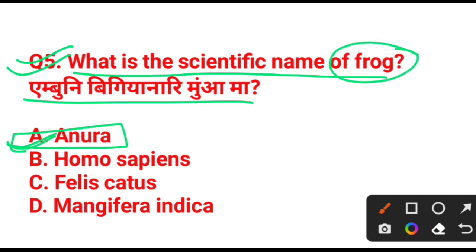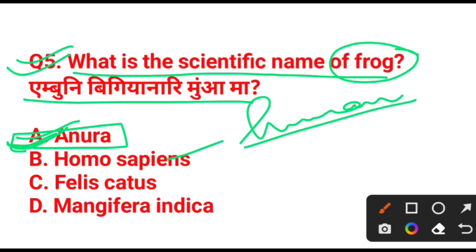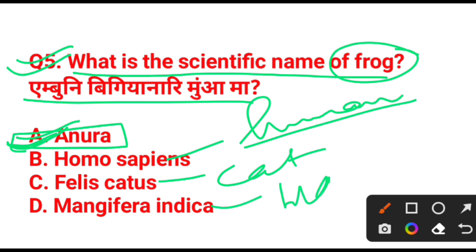Question number 6: the options include Anuran, Homo sapiens for human, Phallus, Catars, and Mangifera indica — Mangifera indica is the scientific name of mango fruit. And Anuran is the scientific name of frog.